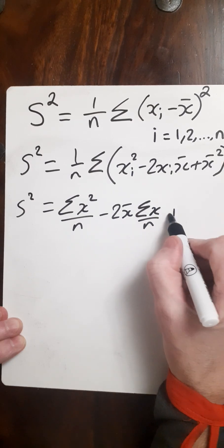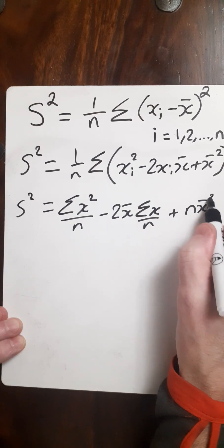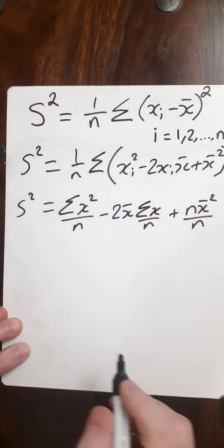Then here I'm going to have n x bar squared over n.